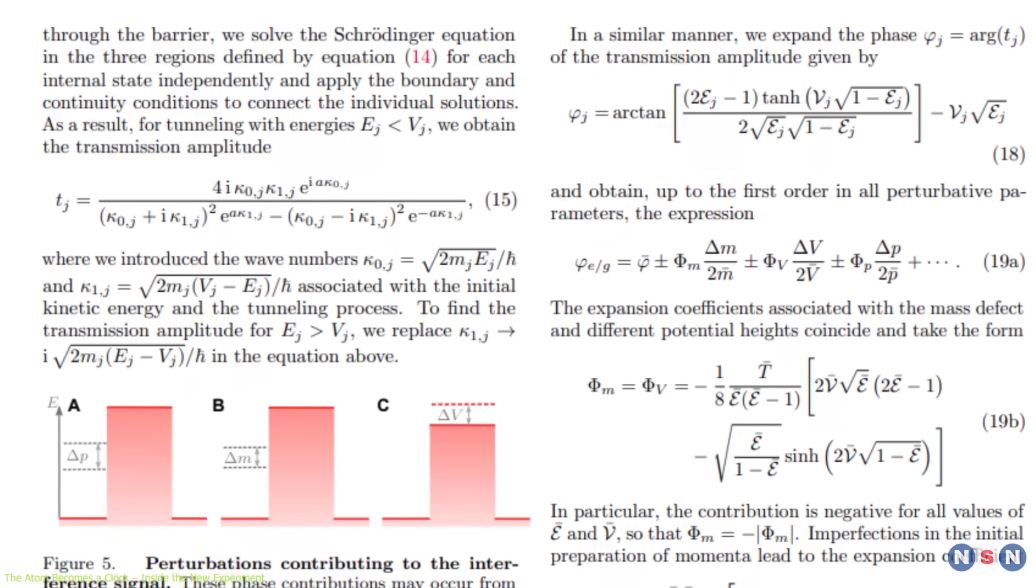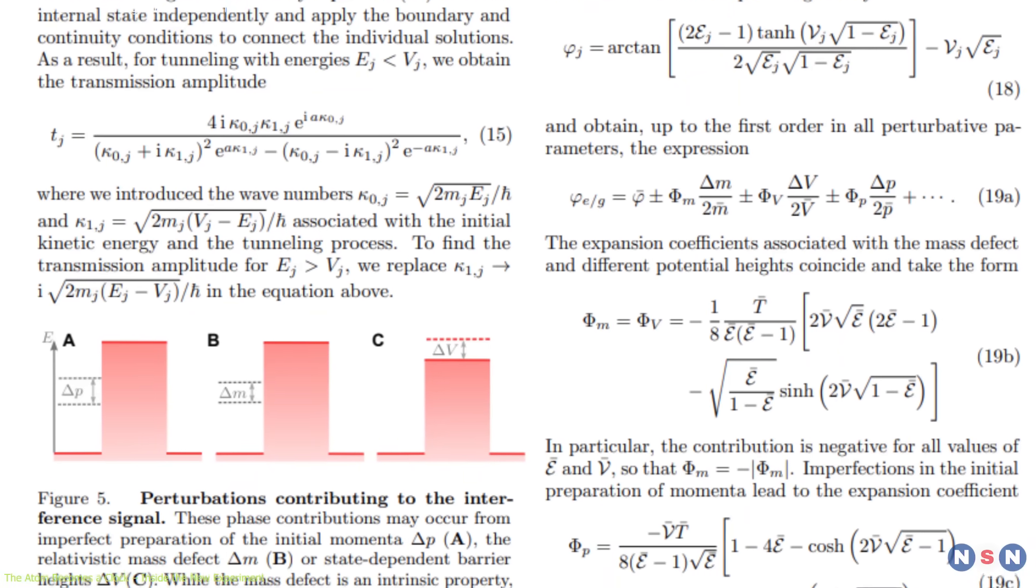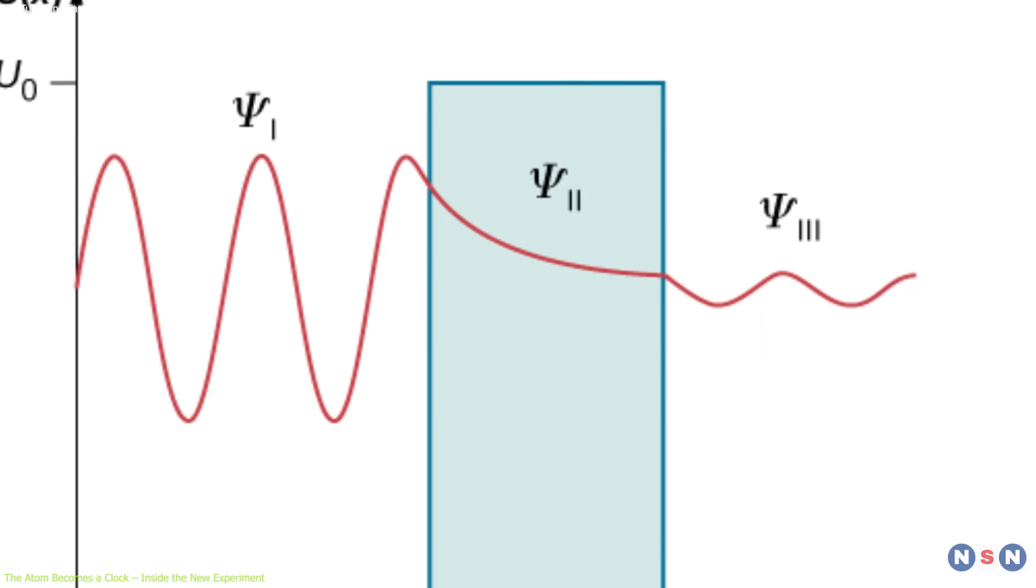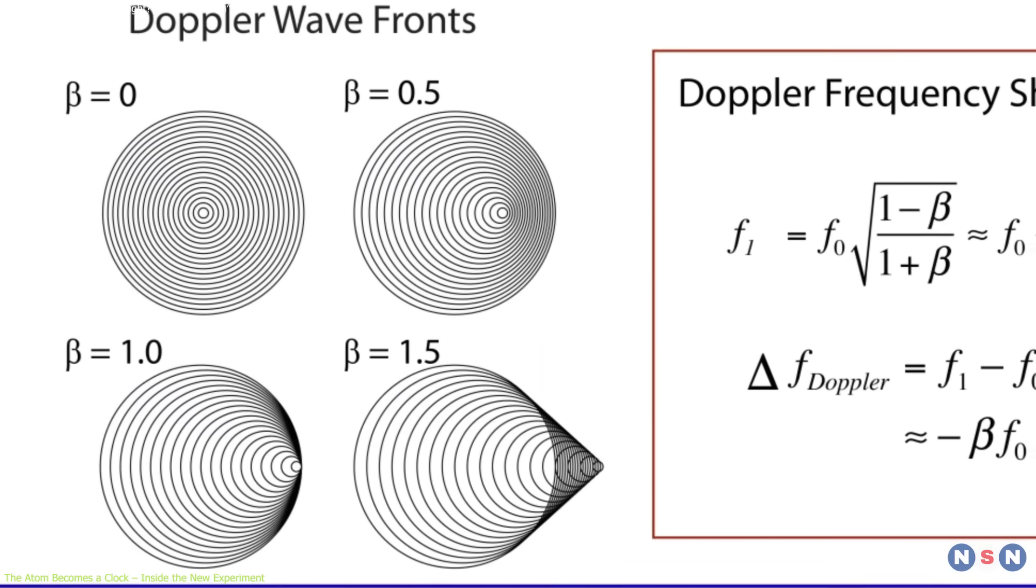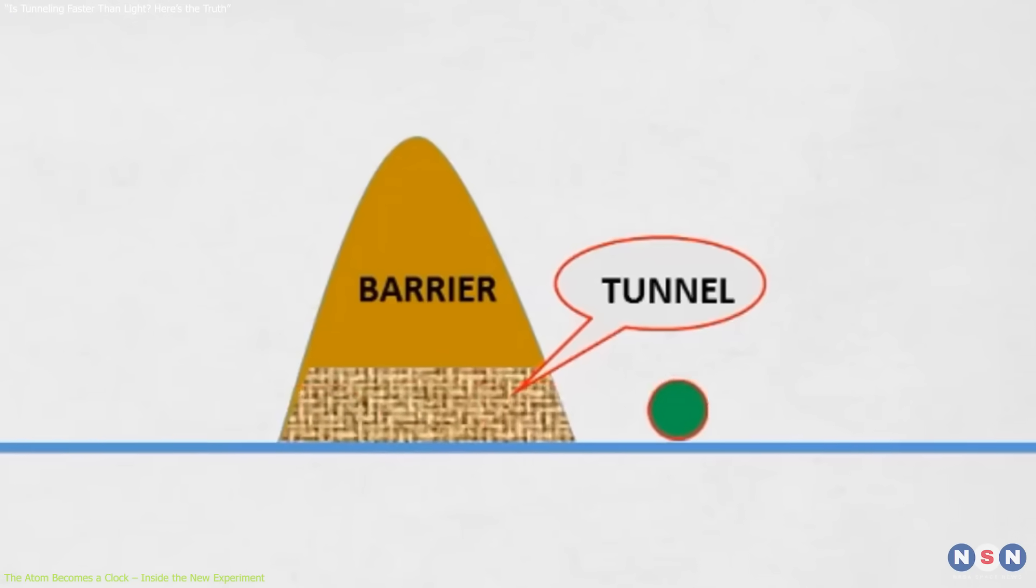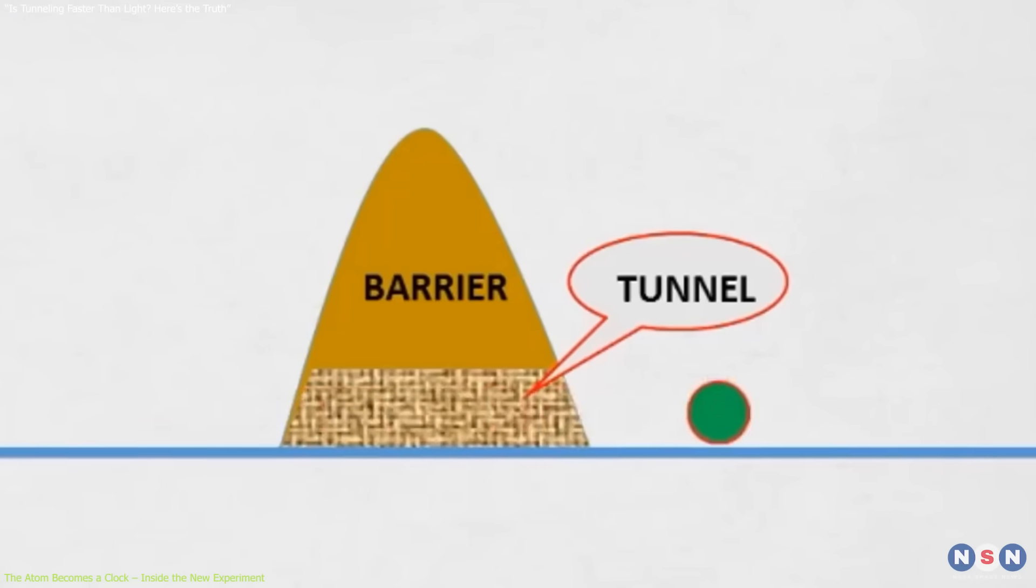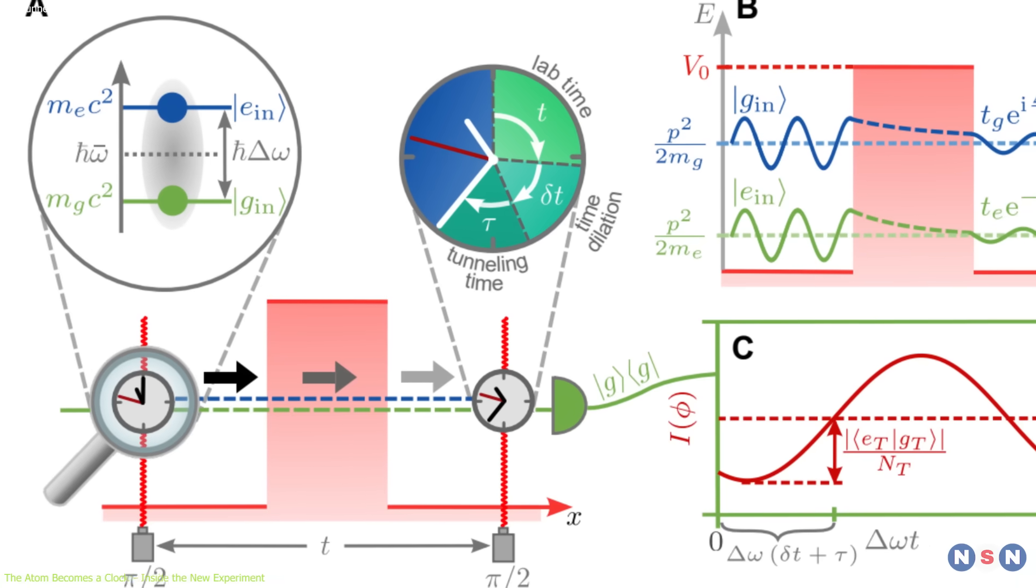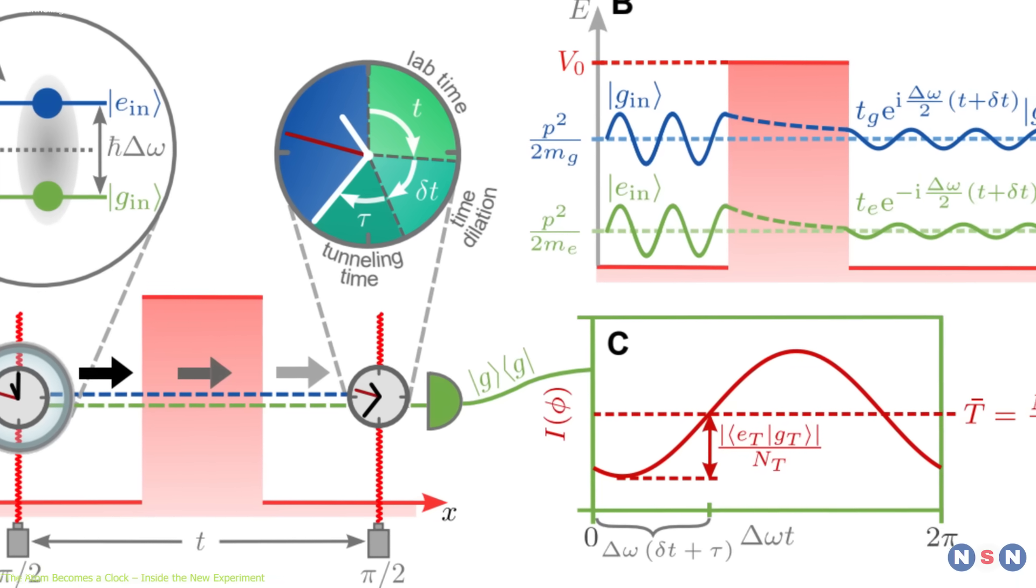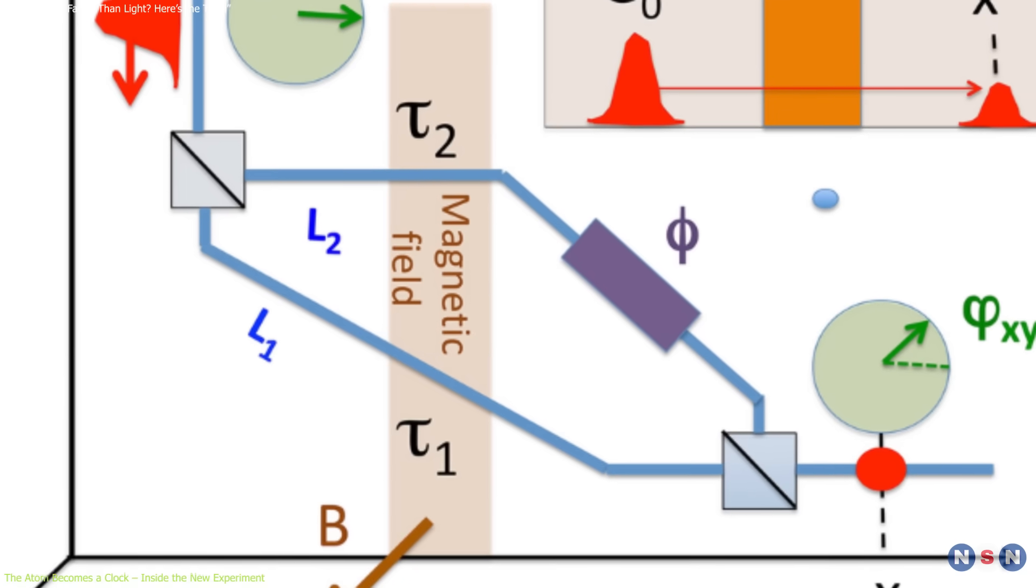Their theoretical model also covers non-ideal conditions, including state-dependent barrier heights, mass defects, and Doppler effects. They mathematically separate these variables and show how to mitigate their influence. Even spurious phases from state-dependent momentum differences or imperfect trap releases are accounted for. Perhaps most notably, their approach transcends the limitations of earlier tunneling time theories.